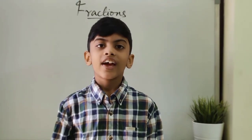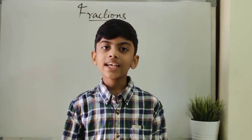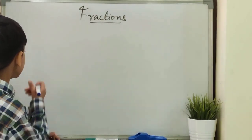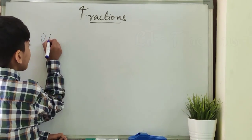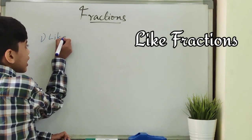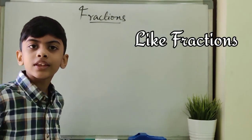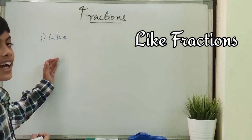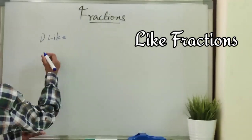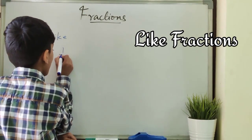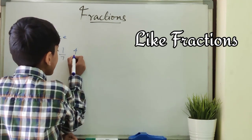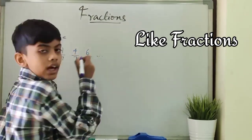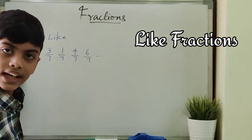Now, let's see what are like, unlike and unit fractions. So first, like fractions. The fractions with same denominators are called like fractions. For example, 3 by 7, 1 by 7, 4 by 7, 6 by 7 and so on are called like fractions.